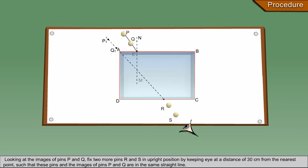Looking at the images of pins P and Q, fix two more pins R and S in an upright position by keeping eye at a distance of 30 cm from the nearest point such that these pins and the images of pins P and Q are in the same straight line.